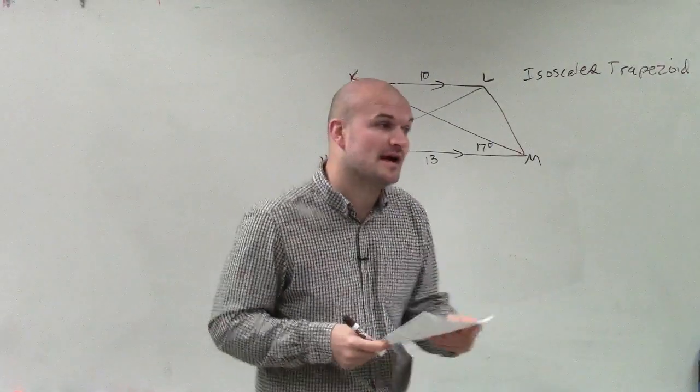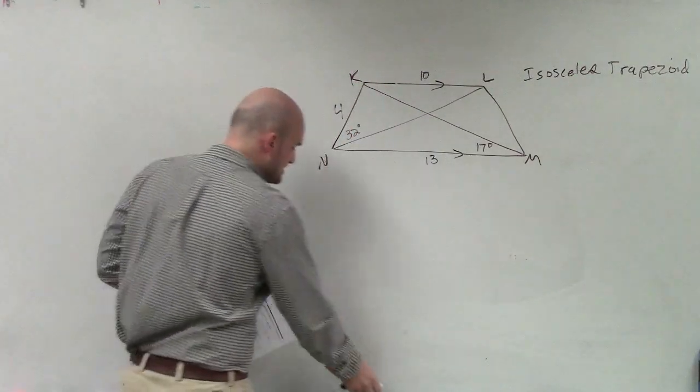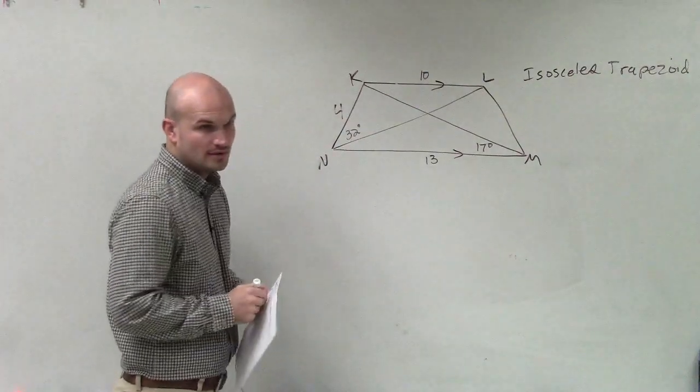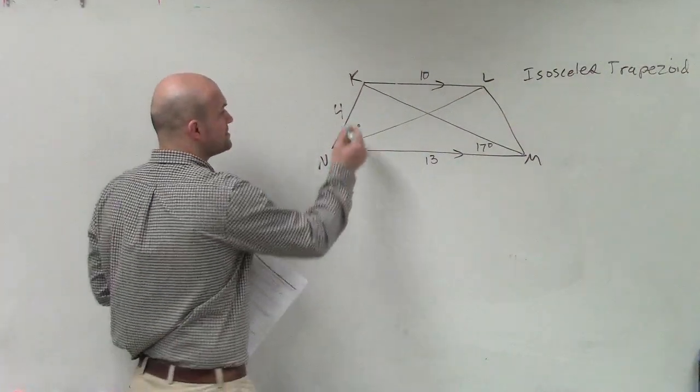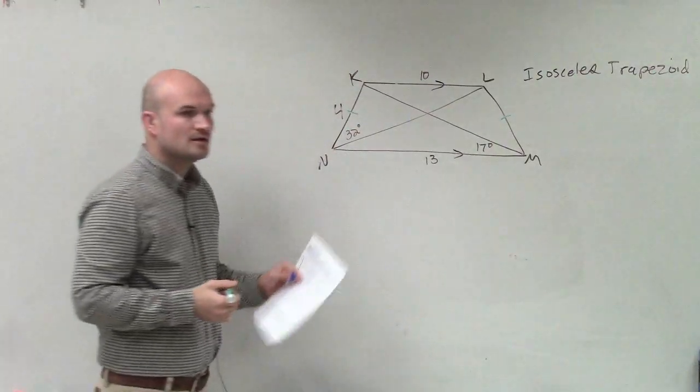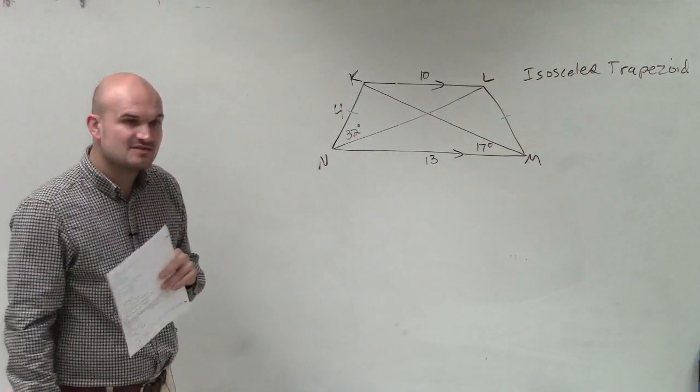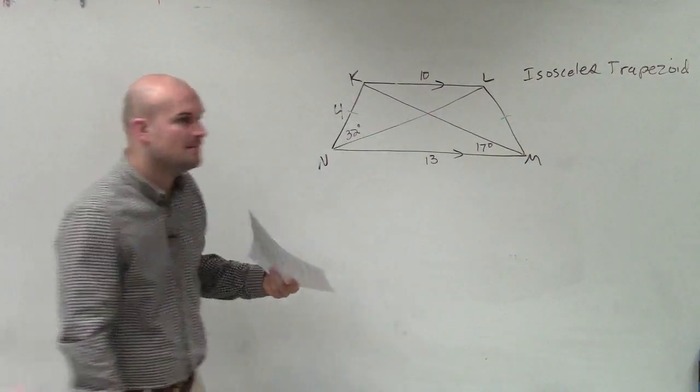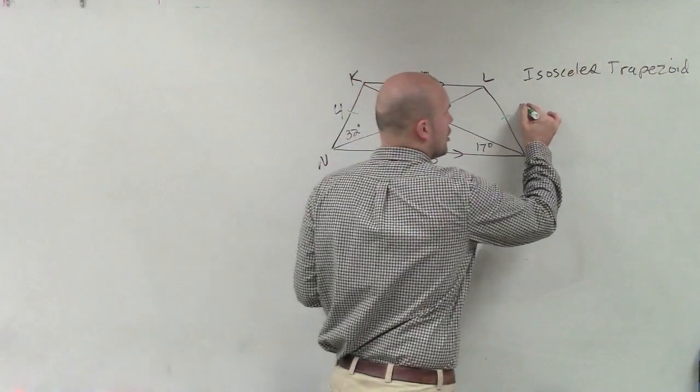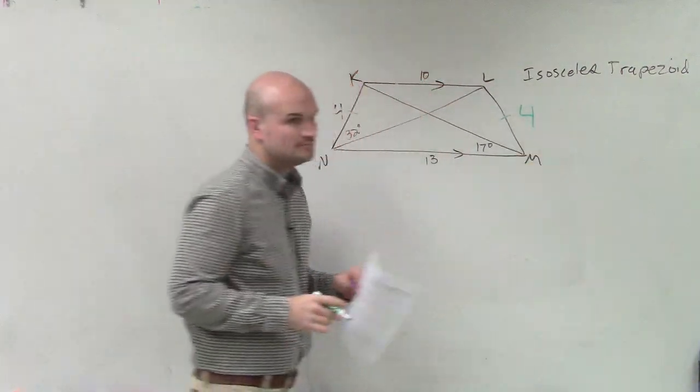And that's also important about an isosceles trapezoid is, remember, opposite sides are congruent, right? You have one pair of your opposite sides. So therefore, that side is congruent with that side. So if the length of KN is 4, then we know that the length of LM also has to be 4, right?